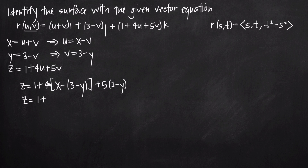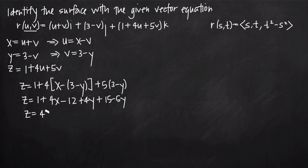Simplifying: distributing the 4 across the bracket gives 4x minus 12 plus 4y, and 5 times (3 minus y) gives plus 15 minus 5y. Combining everything: we get 1 plus 4x plus 4y minus 5y minus 12 plus 15, which simplifies to 4x minus y plus 4. Then subtracting z and 4 from both sides gives us 4x minus y minus z equals negative 4.